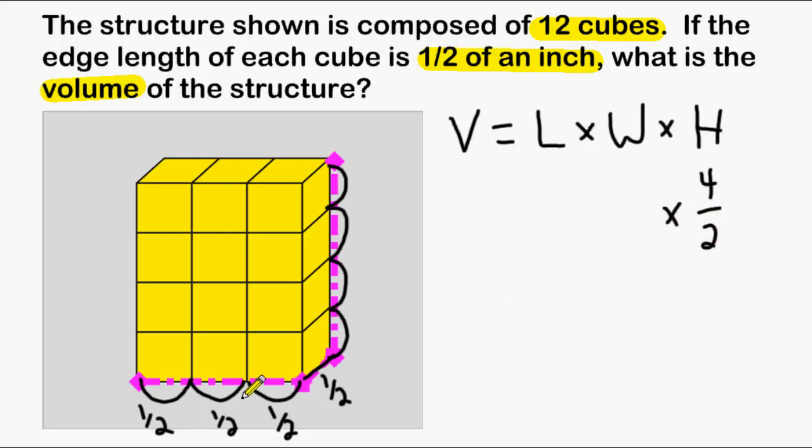For the width, we can substitute that with the improper fraction of three halves, and the length is just one half. So to find the volume, all we have to do is multiply these fractions together.